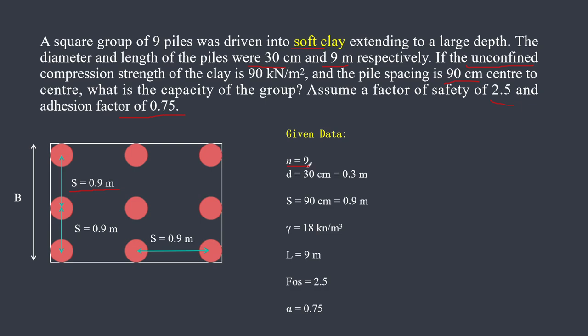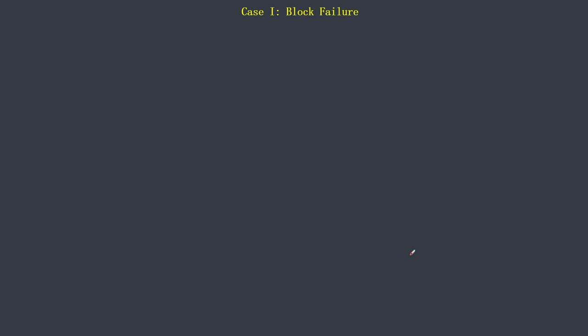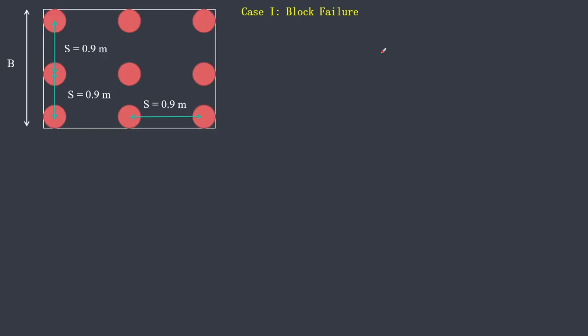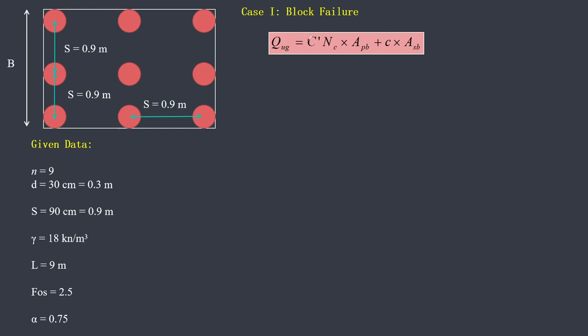From the given data: n is the number of piles = 9, diameter = 0.3 m, spacing = 0.9 m. Unit weight is not required and not given. Length of pile = 9 m, factor of safety FOS = 2.5, adhesion factor α = 0.75, and unconfined compressive strength qu = 90 kN/m². This numerical is solved in two cases: Case 1 considers block failure, Case 2 considers individual failure of the pile.